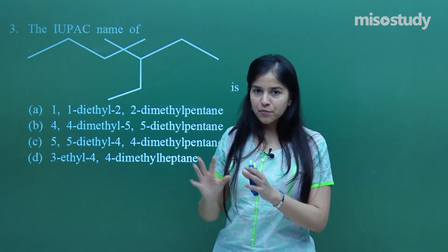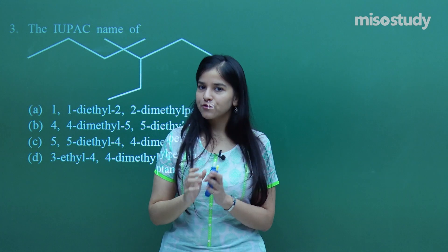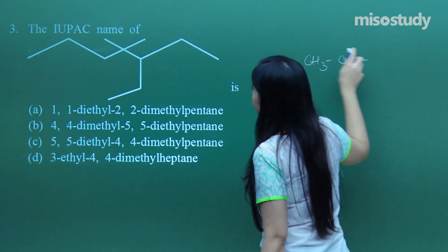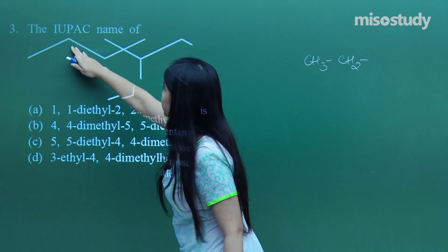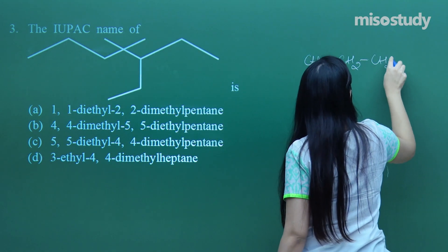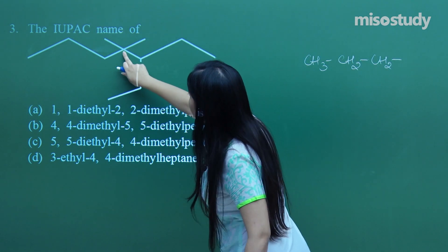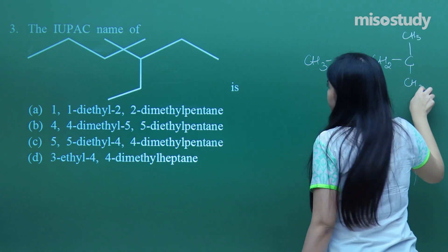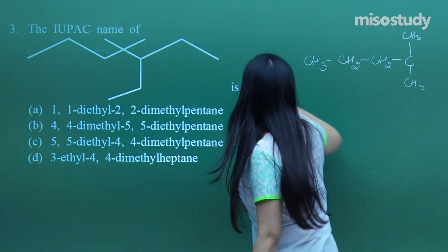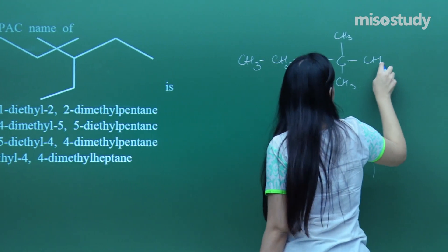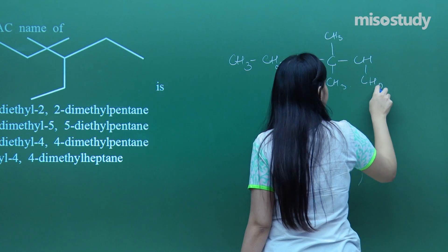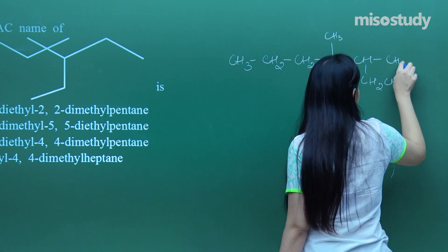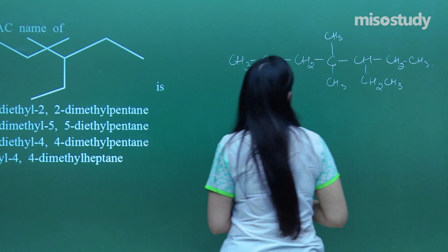I will first draw the structural formula to make it easy. Draw with me simultaneously. I have got CH3, starting from here: CH3, then CH2, then CH2 again, and here I have a carbon with two methyls attached. What else do I have? The consecutive chain — CH again, this time with an ethyl: CH2CH3, and the remaining CH2 and CH3. That is what they are depicting in the bond line formula.